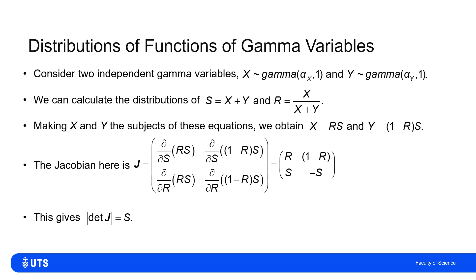I then replace my X's with RS's, my Y's with 1 minus R S's, and multiplied by the Jacobian. And then I still need to figure out the range of these variables.